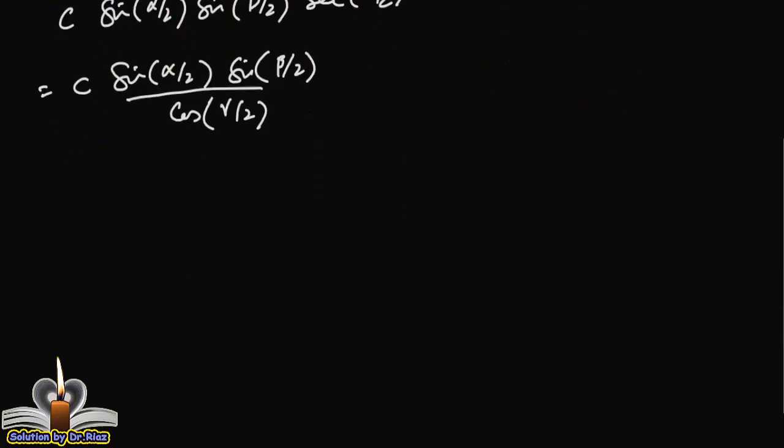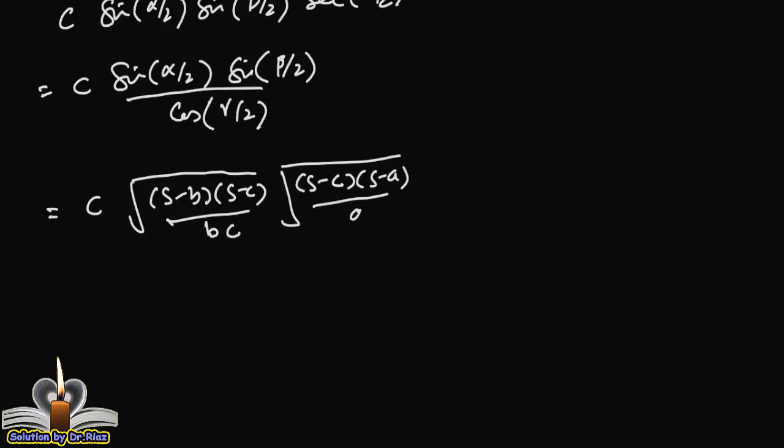Now, values put together, c into sin alpha by 2, square root under s minus b, s minus c over bc, multiply, sin beta by 2, s minus c, s minus a over ac.